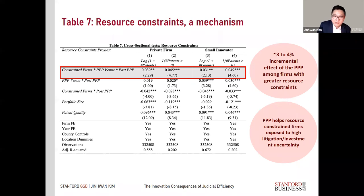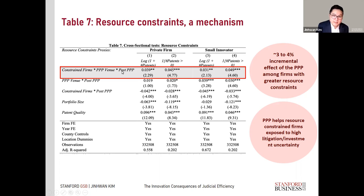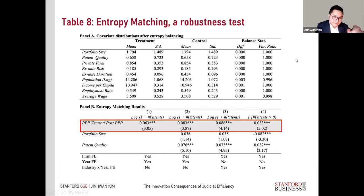The third mechanism test expects results to be stronger among resource-constrained firms. We use private firms as a proxy for resource-constrained firms compared to public firms, and small innovators — those with five or fewer patents in their portfolio. We find our results are incrementally stronger for these resource-constrained firms, with about a 3 to 4% incremental effect, consistent with the PPP helping reduce litigation burden for smaller, resource-constrained innovators.